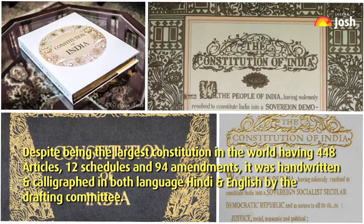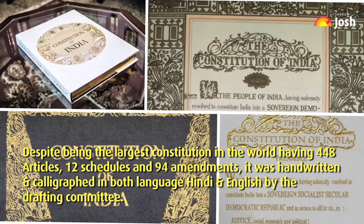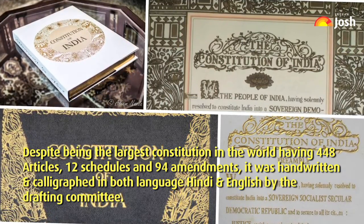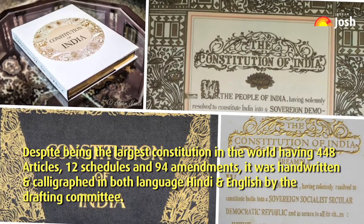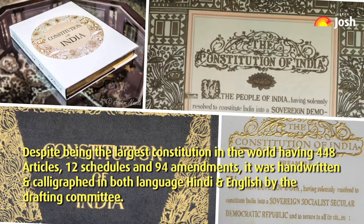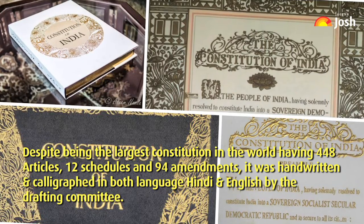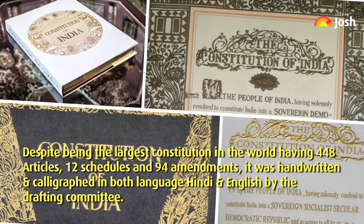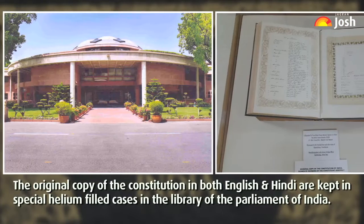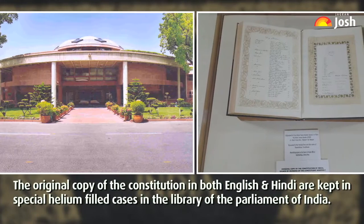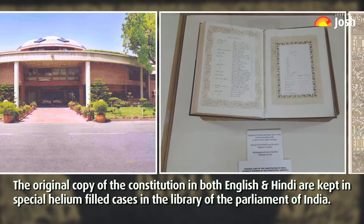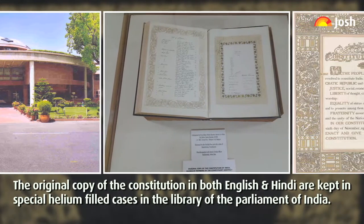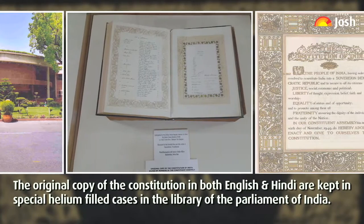Despite being the largest constitution in the world, having 448 articles, 12 schedules, and 94 amendments, it was handwritten and calligraphed in both languages Hindi and English by the drafting committee. The original copies in both English and Hindi are kept in special helium-filled cases in the Library of the Parliament of India.